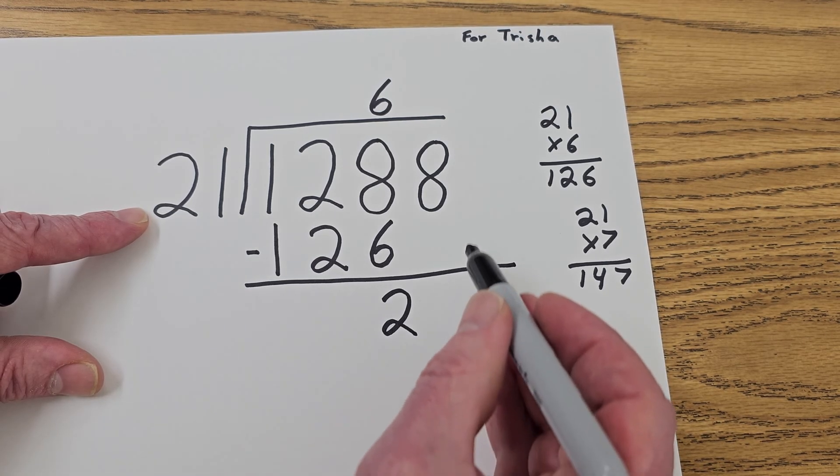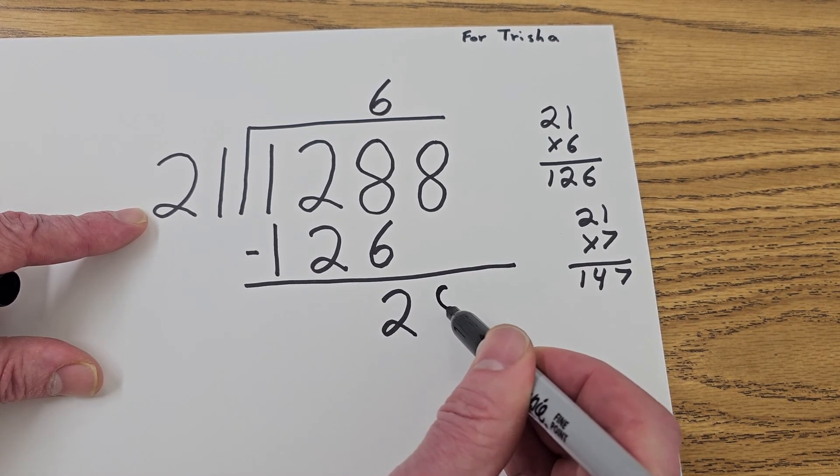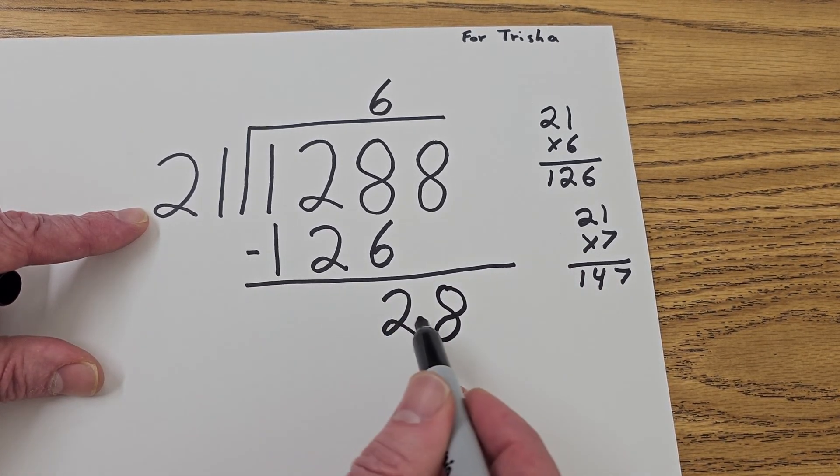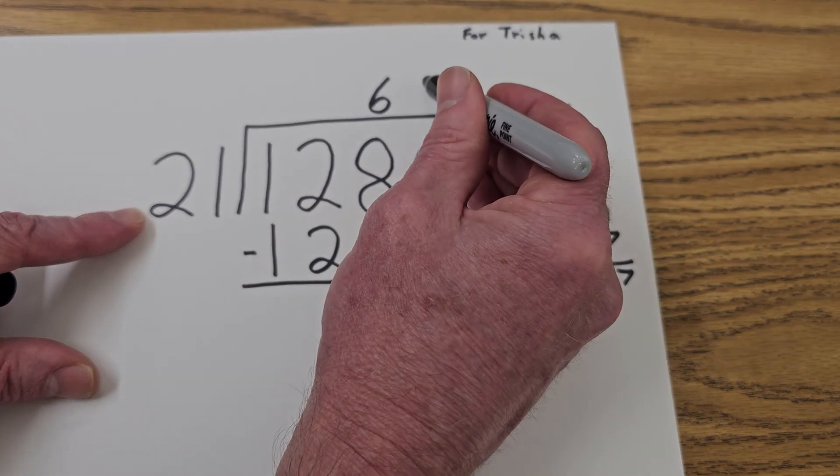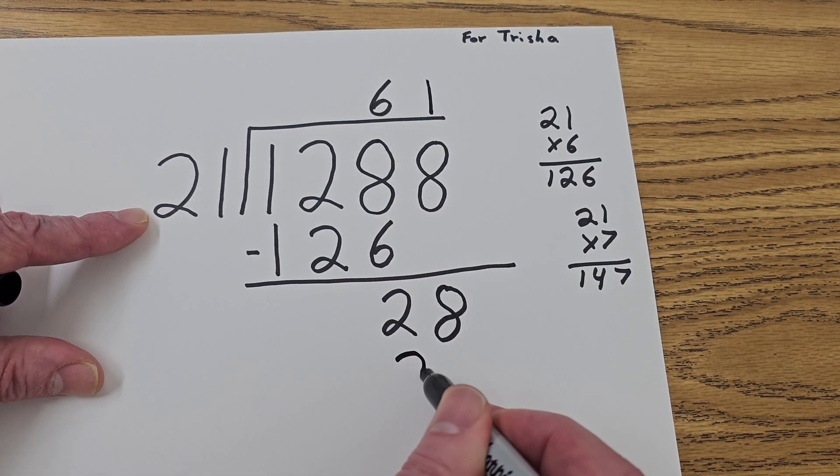So now my next step is to bring the next number down. So I'm going to put the 8 right down here. I brought that 8 all the way down here. So can I put 21 into 28? Yes, you can. How many times? 1 time, so 1 times 21 is 21.